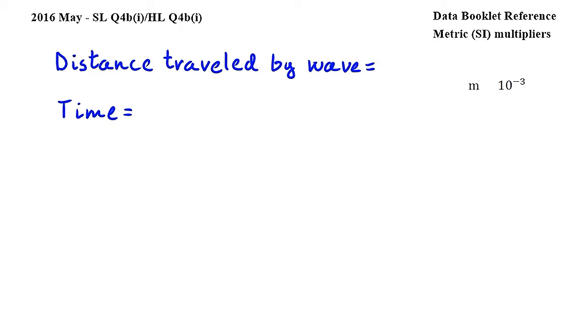You can think of a distance displacement graph of a wave as a photograph of the wave at a given point in time. This model is not exactly accurate in this question since we have a longitudinal wave, but we can still use this model to answer some of the question parts.